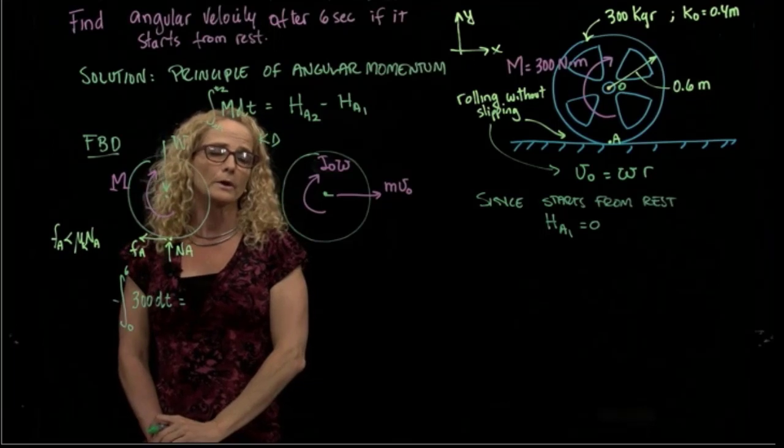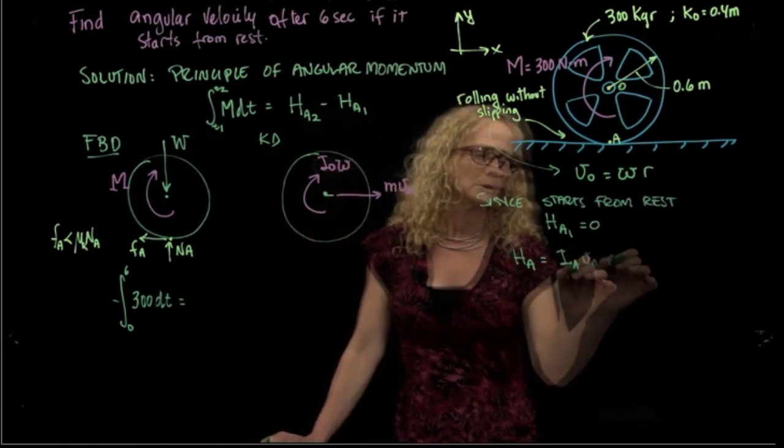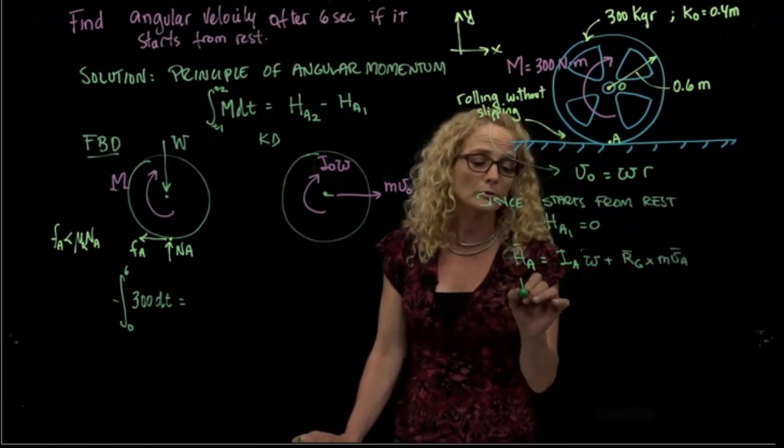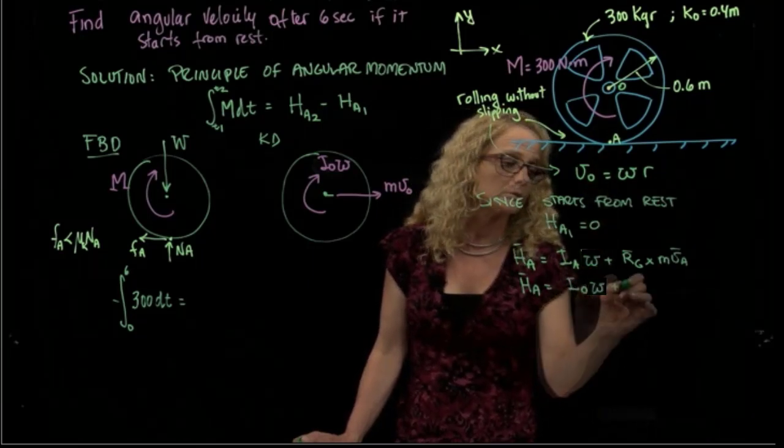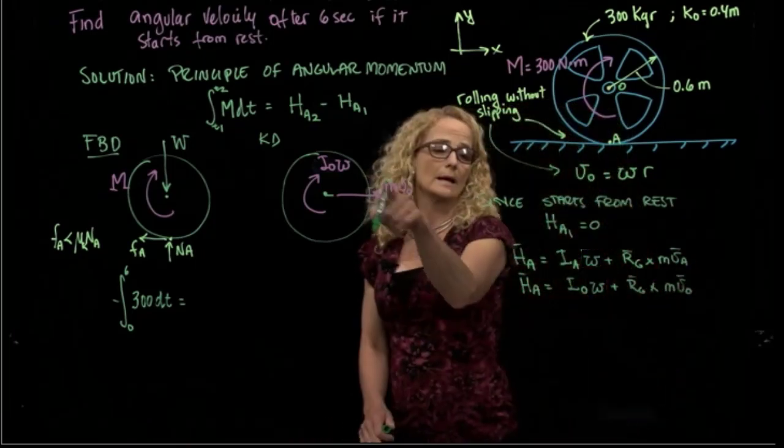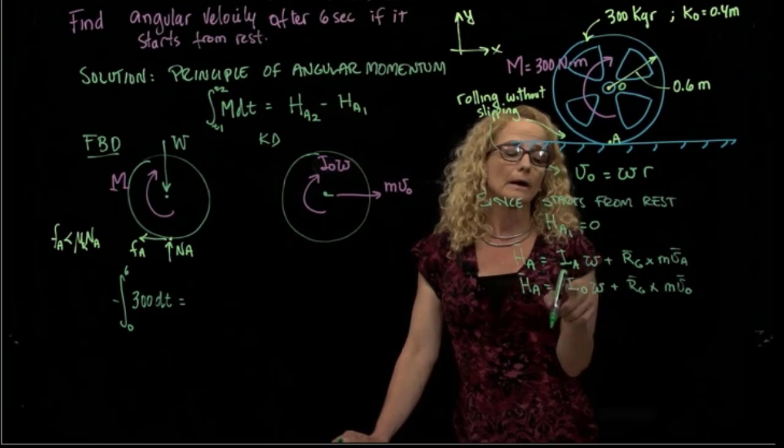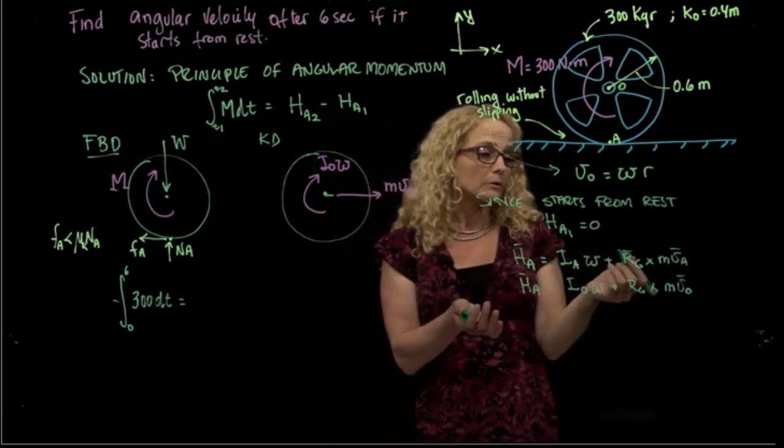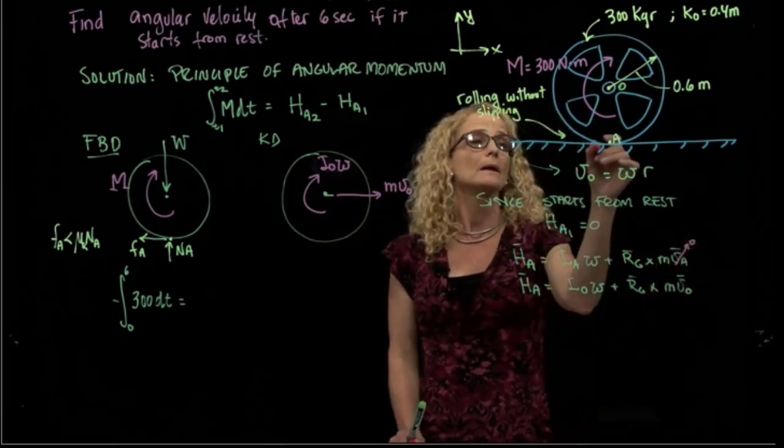What is the expression for H_A2? I can write it in several ways: mass moment of inertia times angular velocity plus R_G cross m*v_A, or another equation that I can use (and we demonstrated that in the theory) is the moment with respect to the center of gravity, which in this case is O, plus the same distance cross mass velocity. I will use the second one because I am given the radius of gyration with respect to this point.